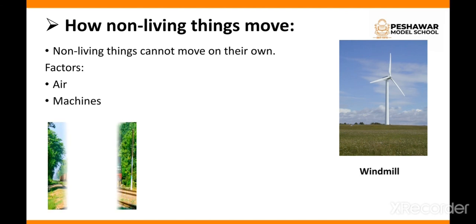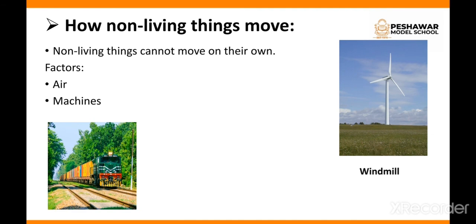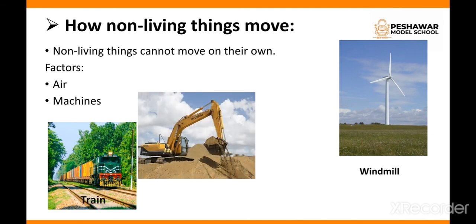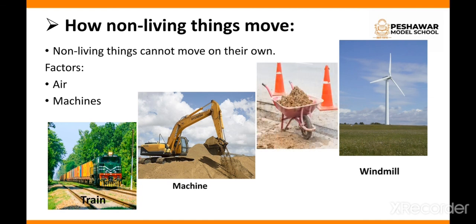The second factor is machines. For example, trains, tractors, construction machines, and wheelbarrows are all considered machines. They have systems that help them move. When we push or pull them, or with the help of machines, these non-living things can move.